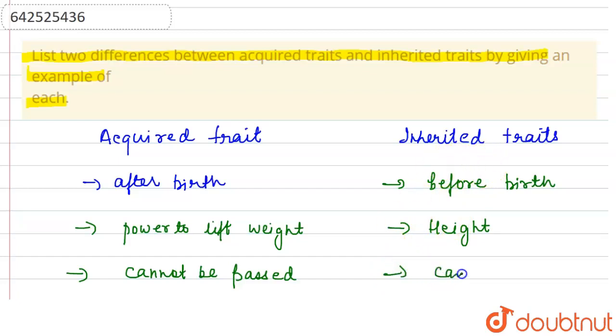This is the difference between the acquired trait and the inherited. Acquiring is after birth and inheritance is from their parents. From the parents they have inherited it, this is the difference.